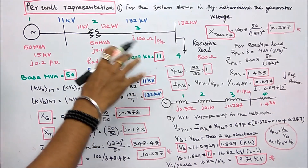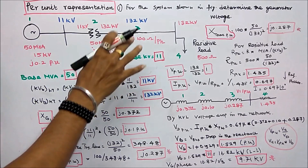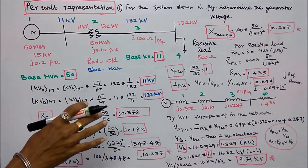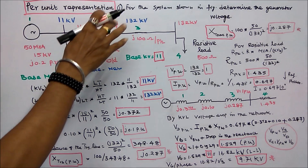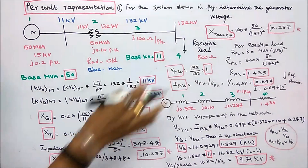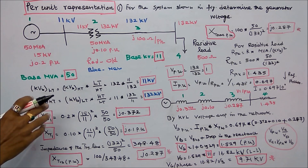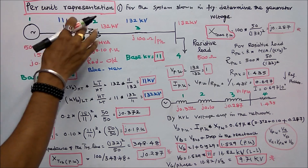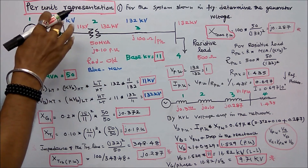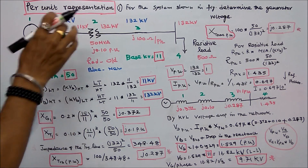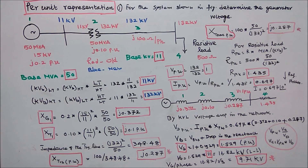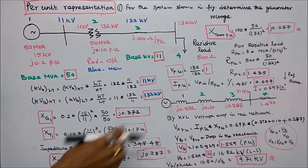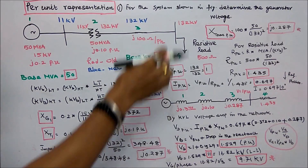Problem number 2: for the system shown in the figure, determine the generator voltage. The system consists of 4 components: one generator rated 50 MVA, 15 kV, per unit reactance 0.2; one transformer rated 50 MVA, 11 kV / 132 kV, per unit reactance 0.1; a transmission line with reactance J100 ohms per phase; and a resistive load of 500 ohms.